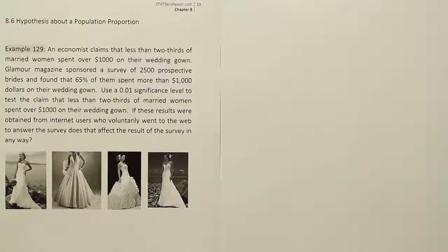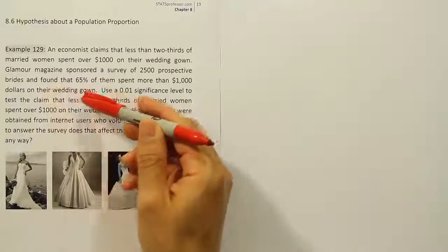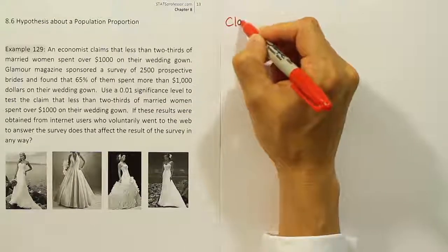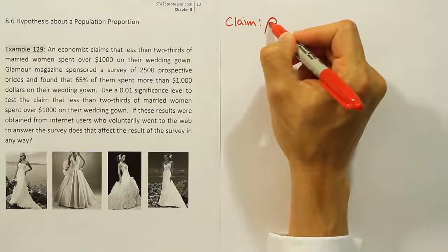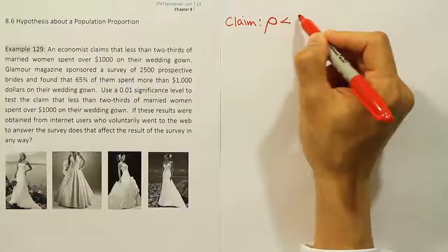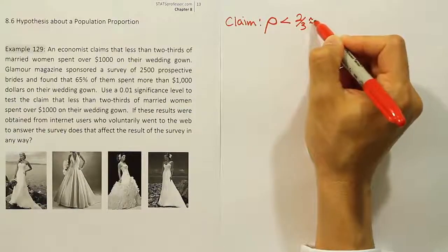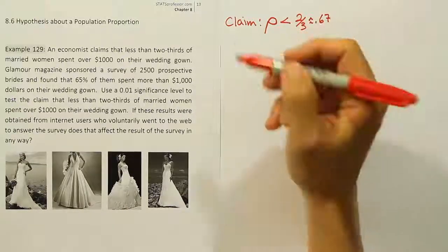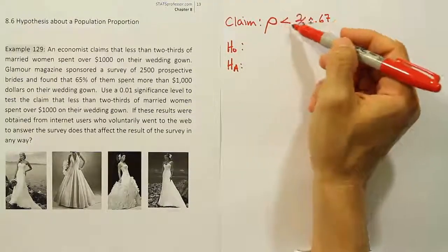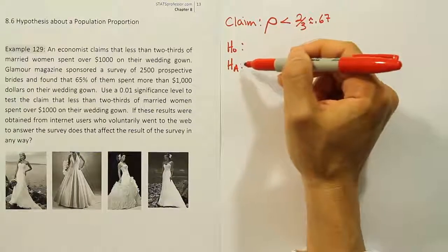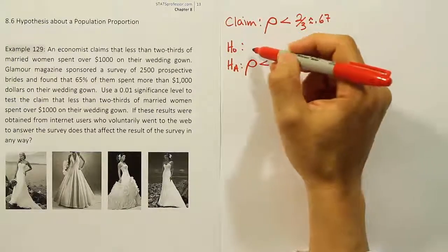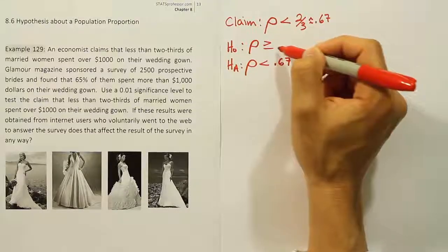Let's start with the first part of the problem — to test the claim that less than two-thirds of married women spent over $1,000 on their wedding gown. The claim is about a proportion: the proportion of the population who spent over $1,000 on their wedding gown is less than two-thirds. Two-thirds as a decimal is approximately 0.67. We need a null hypothesis and an alternative hypothesis. The less-than symbol means it's appropriate for the alternative hypothesis, and the null hypothesis expresses the opposite idea — greater than or equal to that value.